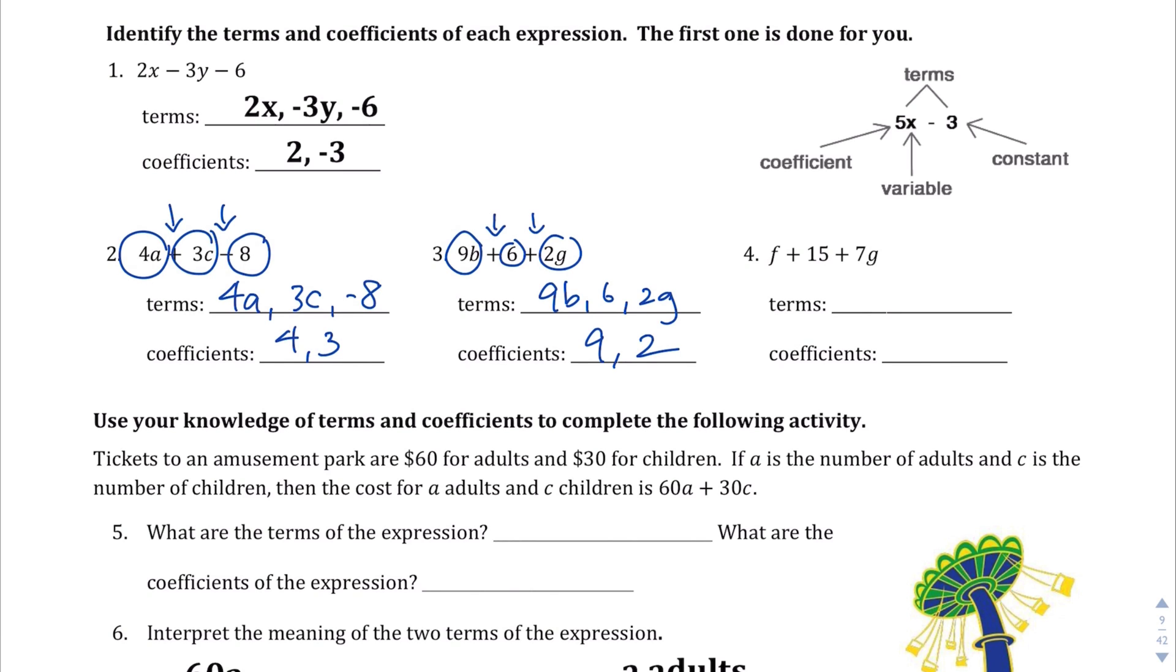Question number 4, we have three terms. We have f, we have 15, and 7g. And our coefficients, this one's a little bit tricky, so it needs some explanation if you didn't understand it before. But the variable f, there's nothing in front of it, but we assume the coefficient of 1 since there's 1f. If it was 0f, that f wouldn't be there, so it's just 1, the coefficient. And then, of course, the g has a 7 in front of it, while the 15 does not have any variables attached to it. So our coefficients are only 1 and 7.